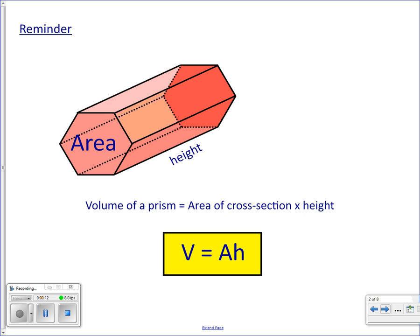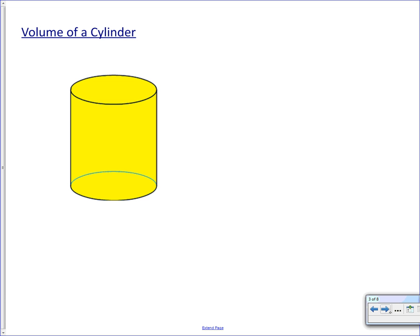This is what we learned last time. The volume of a prism is the area of that constant cross section multiplied by the height. We're going to use that in a little more detail today. We're going to look at a very interesting shape, the cylinder.